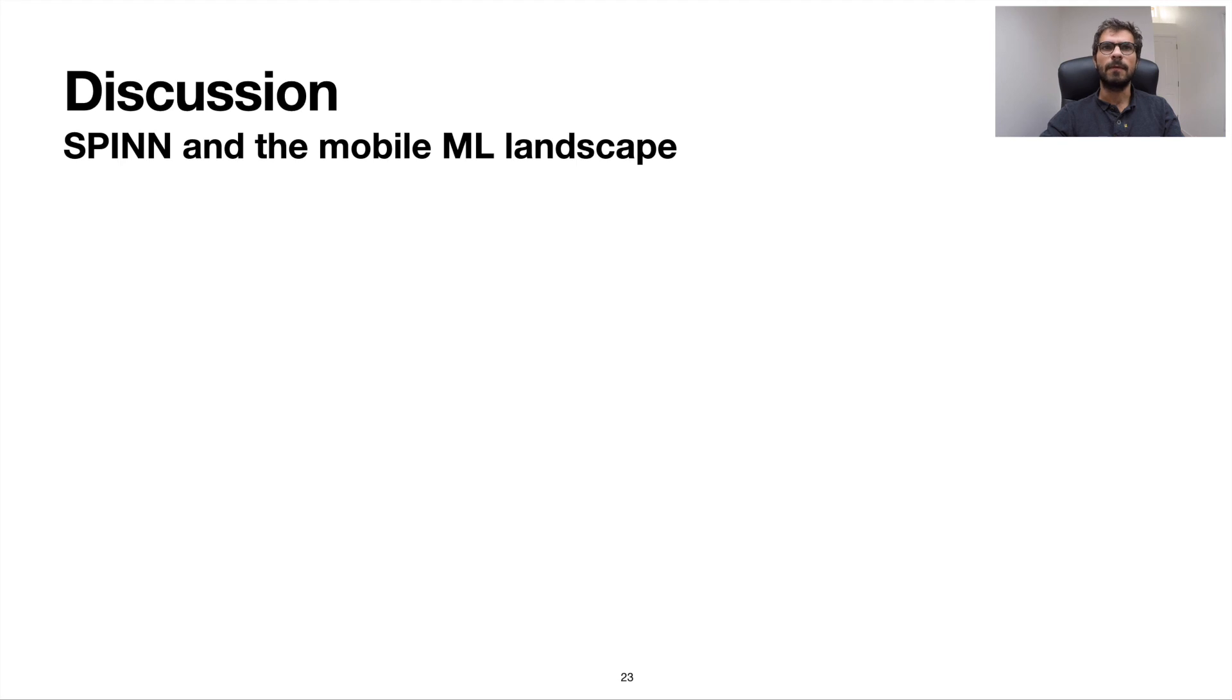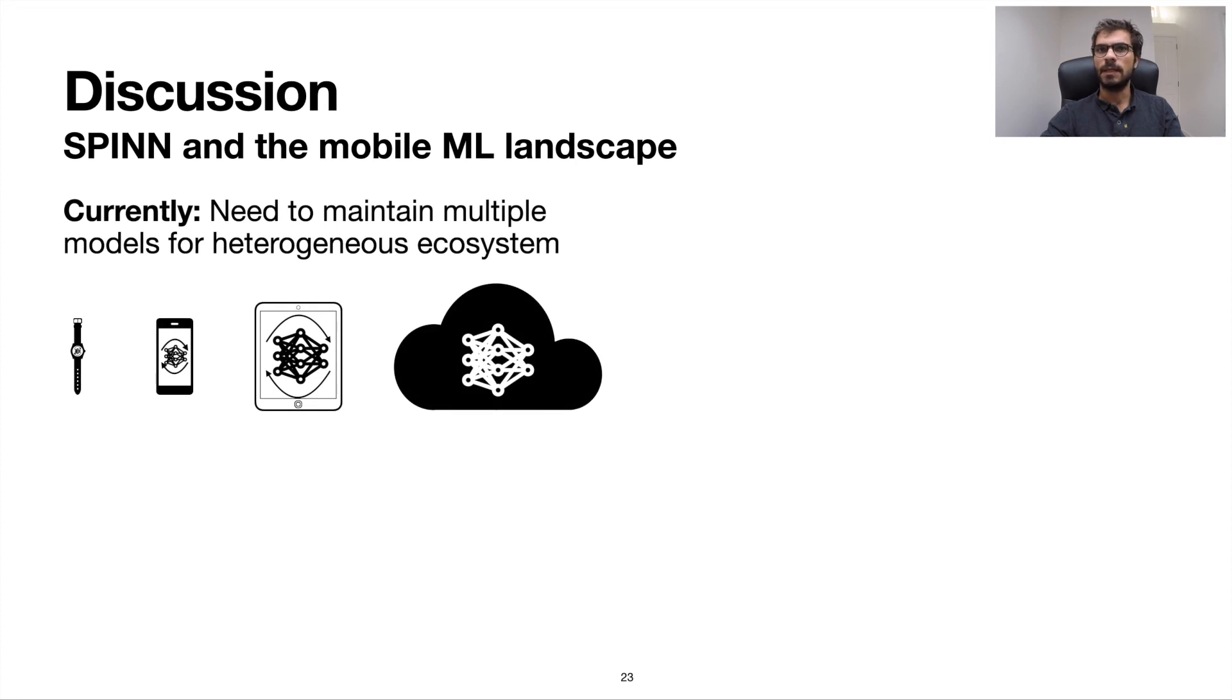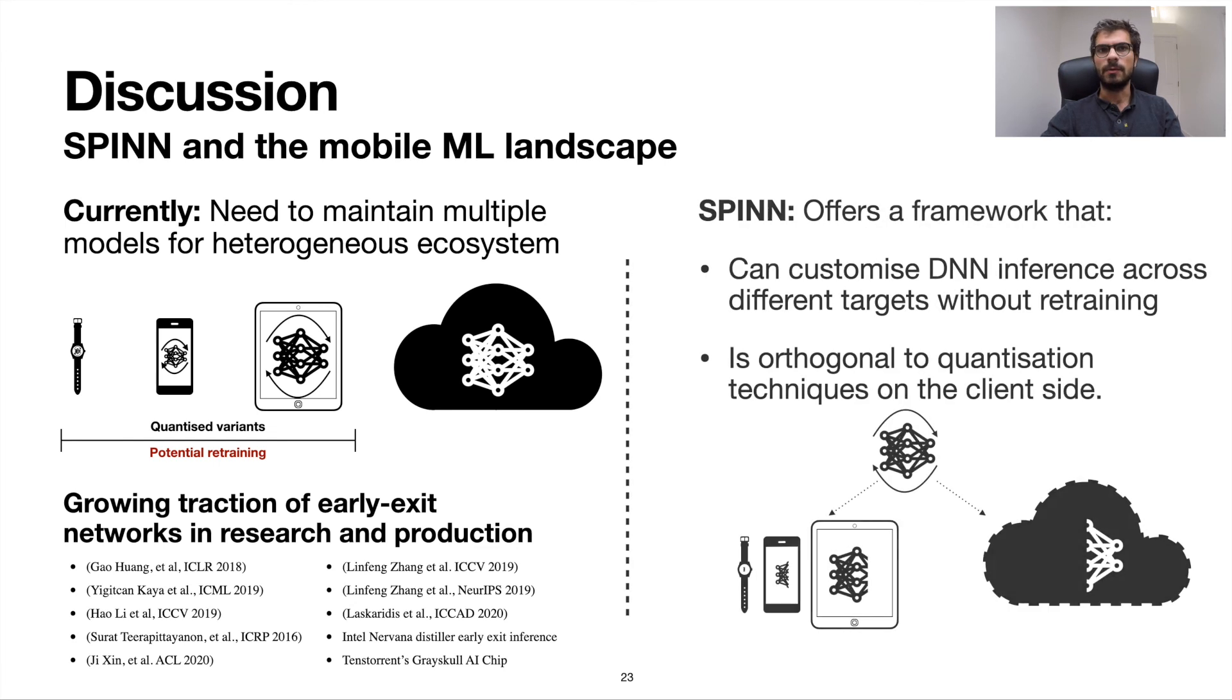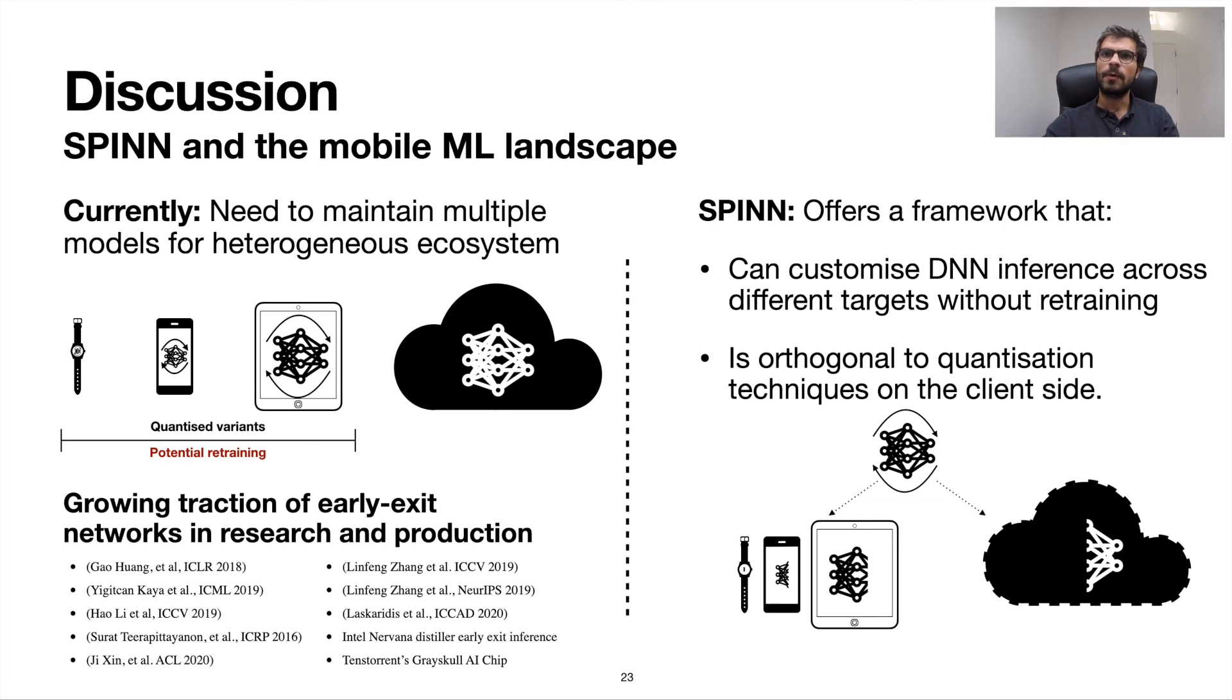But how does spin fit in the current way of embedded ML deployment? Nowadays, the range of devices being out there is quite diverse, ranging from the flagships to low-end and previous-generation devices. Supporting real-time inference across the range is tough and might require optimized deployments such as lower precision networks to be deployed on the lower end. However, further refinement steps may be needed to recover the lost accuracy. At the same time, early exit networks and progressive inference gain traction in research and production. Spin is able to offer a methodology to customize DNN inference across different targets without the need to retrain, while it maintains its orthogonality to DNN compression techniques for client-side execution.